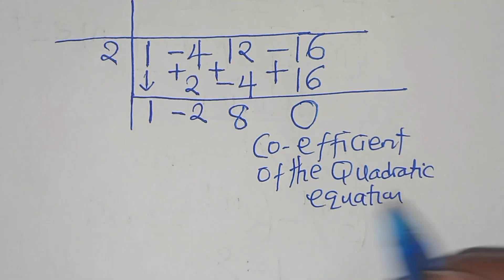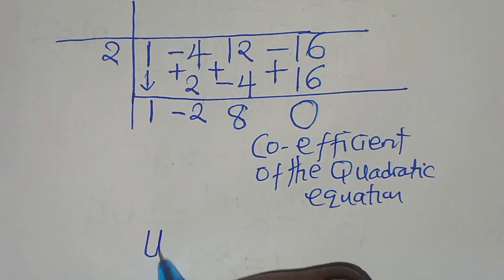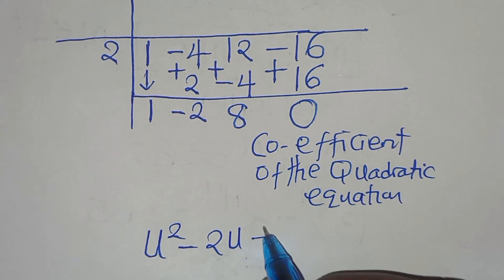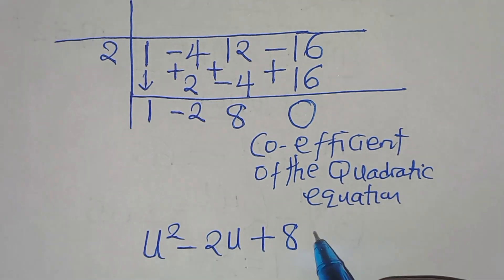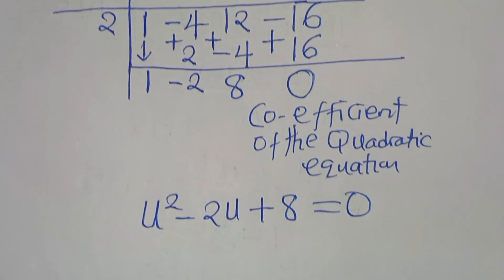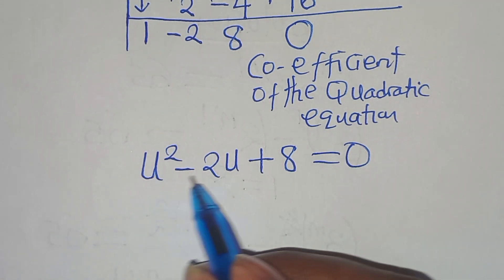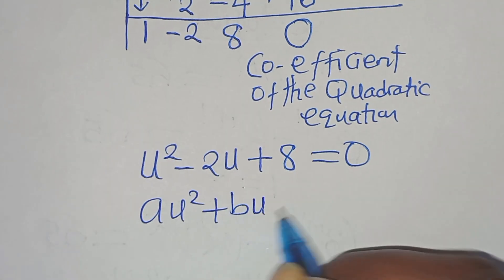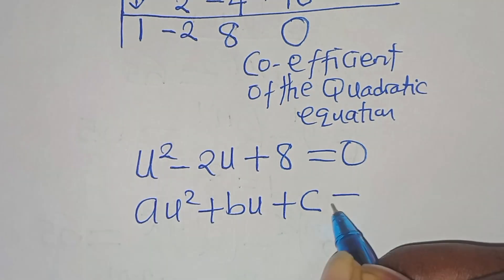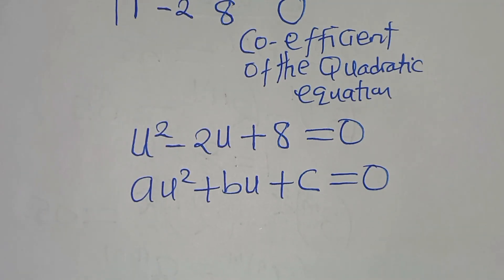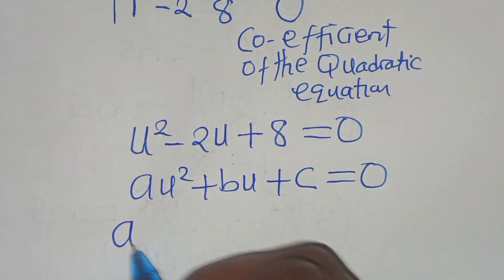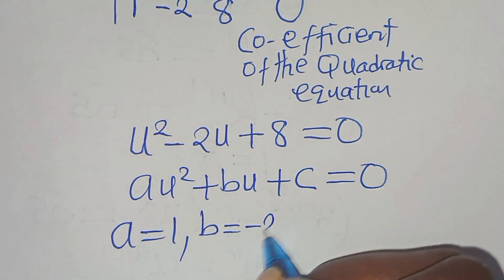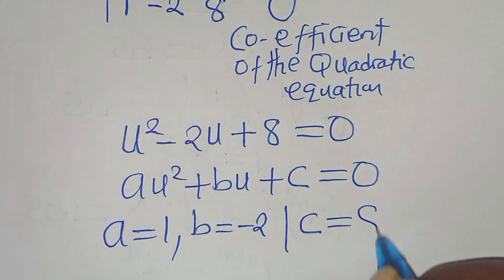The quadratic equation from synthetic division is u squared minus 2u plus 8, equal to 0. This is of the form au squared plus bu plus c equal to 0, where a equals 1, b equals minus 2, and c equals 8.